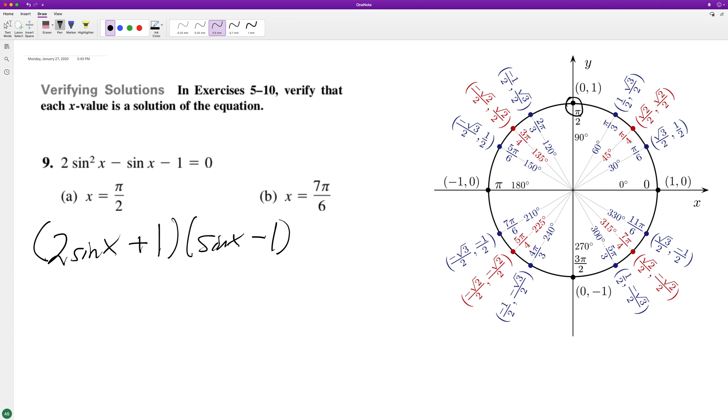We plug in pi over two for sine because sine is y over r. We get one, so it's one over one. So in this instance, we get two times one plus one, times one minus one. This ends up being equal to three times zero, which is equal to zero. So that works out.